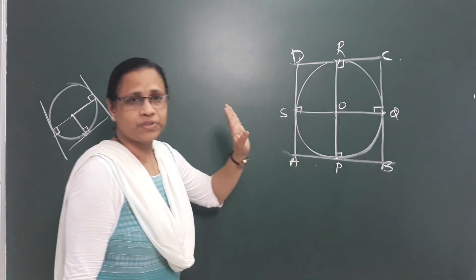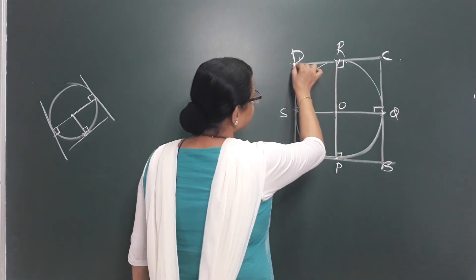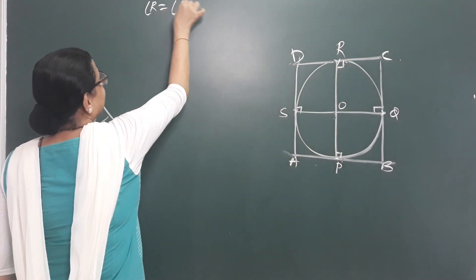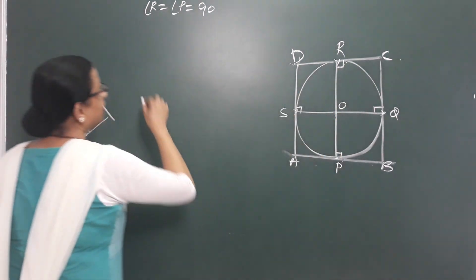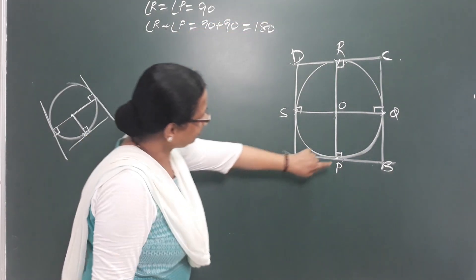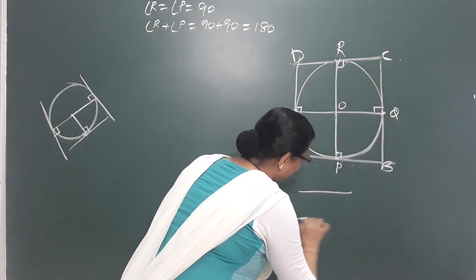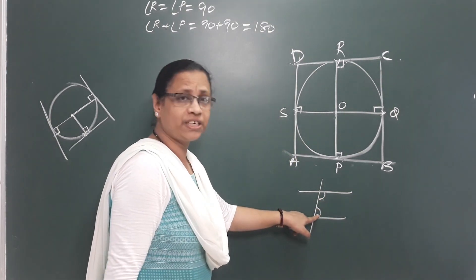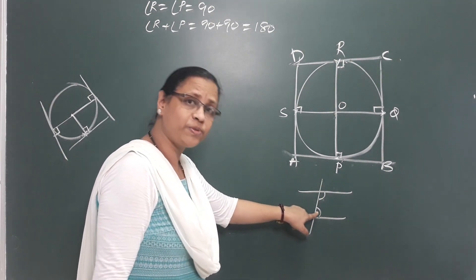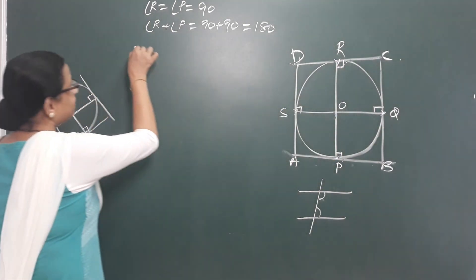By the theory, this angle R is 90 degrees and angle P is 90 degrees. That means angle R plus angle P equals 180 degrees. These two are parallel lines. As co-interior angles, they are supplementary — that means 180 degrees — so these lines are parallel.